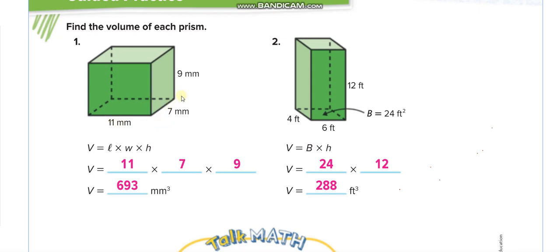11 times 7 times 9, it is millimeter, so millimeter cube. Same thing again here: 6 times 4 times 12. 6 times 4 is 24, and then they times it by 12: 288 feet, so feet cube.